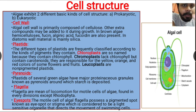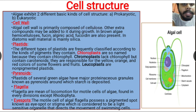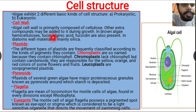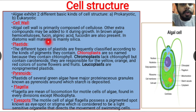Now let's discuss the cell wall of algae. The algal cell wall is primarily composed of cellulose, but other extra compounds may be added during growth. In brown algae, hemicellulose, fucine, and alginic acid can be present in the cell wall. In diatoms, the wall material is mainly silica.